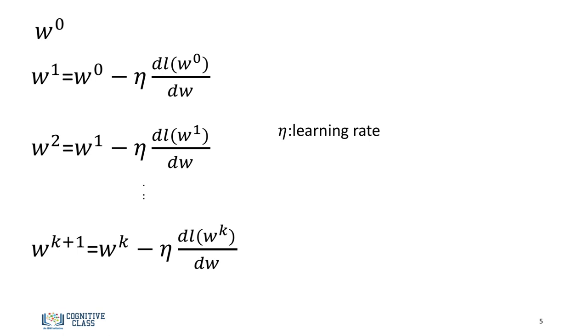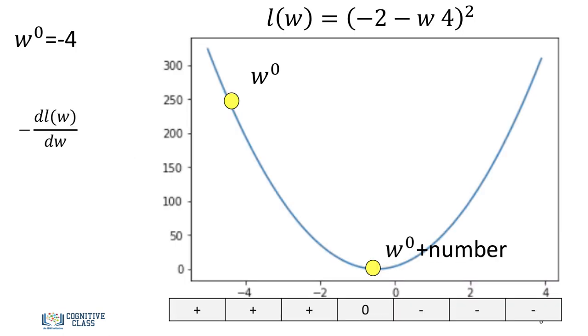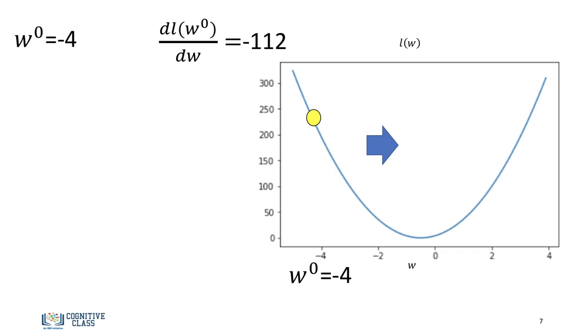Now let's clarify the process with an example. So we have our loss function, and we start off with an initial value of negative 4. So we calculate the derivative at that point. In this case, it's negative 112. And we'll set our learning rate to 1 over 20.